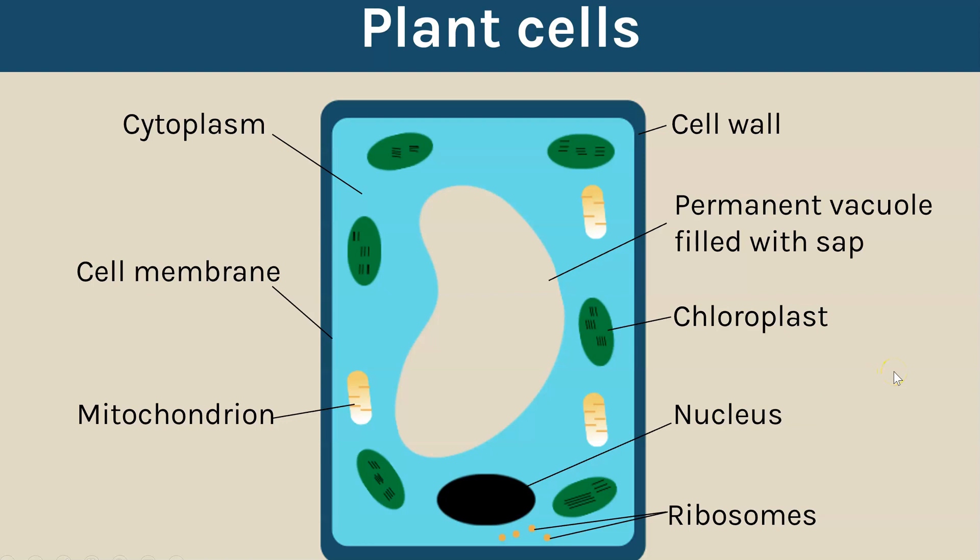Now out of all of those structures inside of a plant cell it's actually only these three which you only find in a plant cell and that is quite a common question for this topic at GCSE. It could be labeling the structures in an animal or a plant cell or it could be suggesting structures that you find in a plant cell that you do not find in an animal cell and these would be your three potential marks for that question.